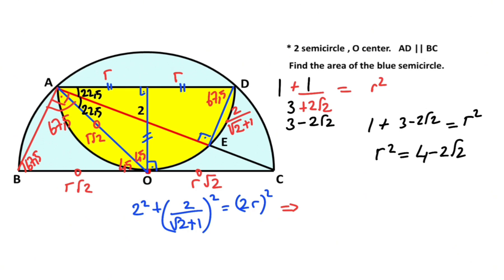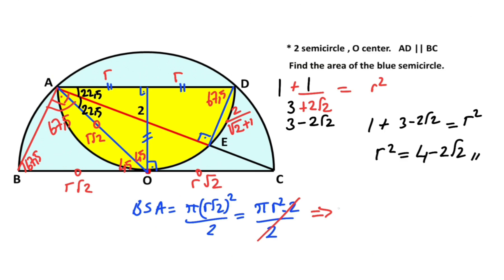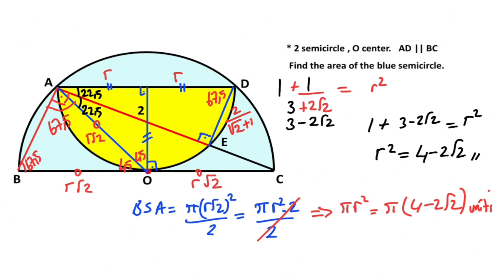There is no need to calculate r directly, because we will already be using r squared when calculating the area of the semicircle. The blue semicircle area equals π times (r√2) squared over 2, which simplifies to π times r squared. We calculated r squared as 4 minus 2√2, so the area of the blue semicircle equals π times (4 minus 2√2) square units.